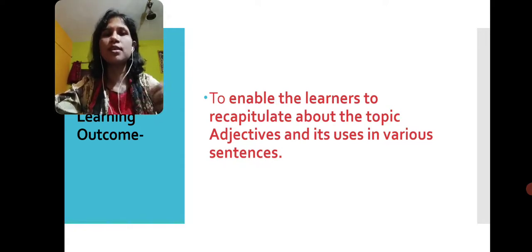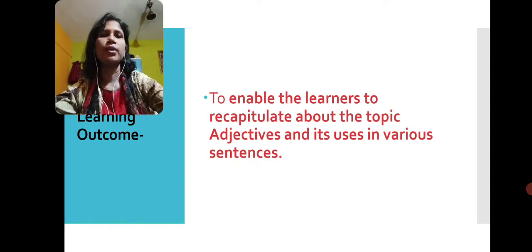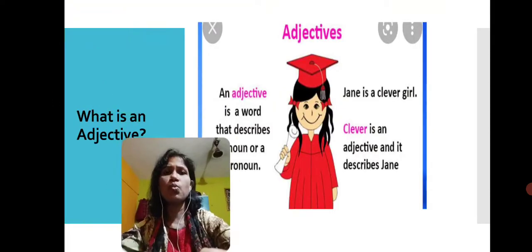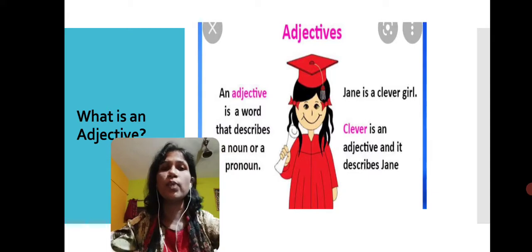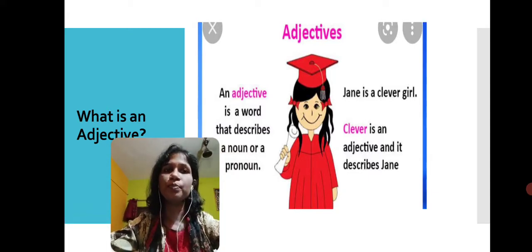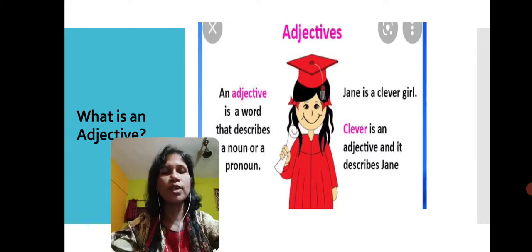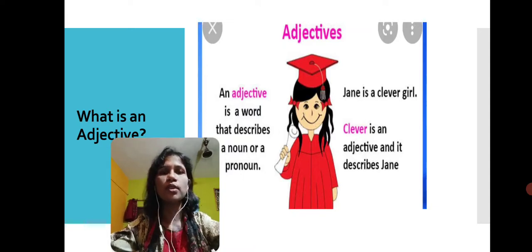So now the question is, what is an adjective? Here in this picture you can see there is a beautiful girl in red dress. So what is an adjective? The definition has been mentioned here: An adjective is a word that describes a noun or a pronoun.